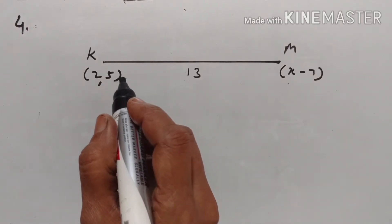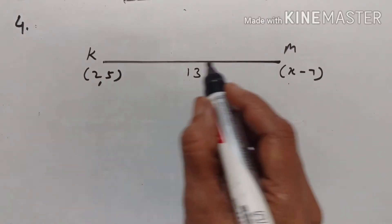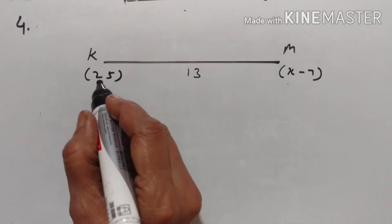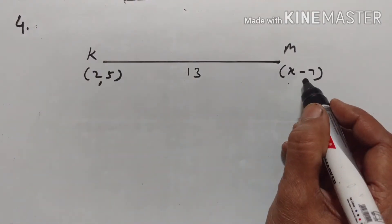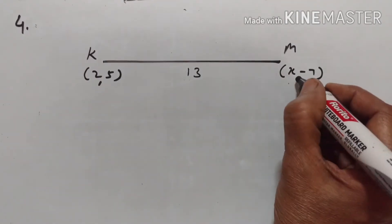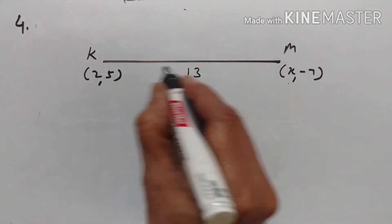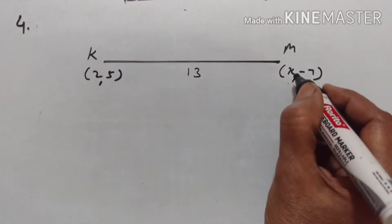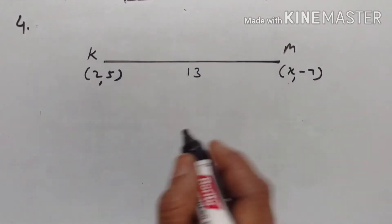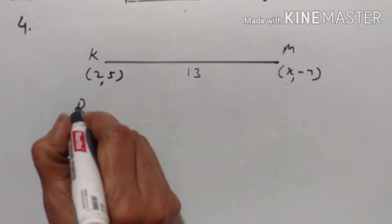Fourth example: the coordinates of K and M are given. K is (2, 5) and M is (x, -7). The distance between them is equal to 13 units. We have to find the value of x.